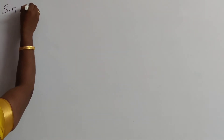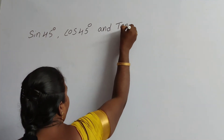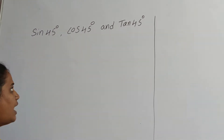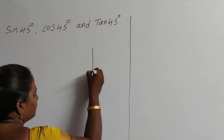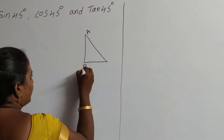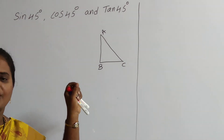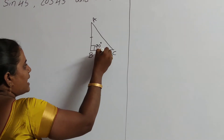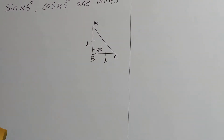By using these three, we also have to find out the remaining three trigonometric ratios. To find the value of sine 45 degrees, you have to take an isosceles right-angled triangle. In this isosceles right-angled triangle, the right angle is 90 degrees and the two sides are equal. So suppose I am taking AB equals to x and BC equals to x.